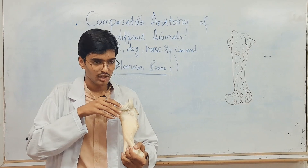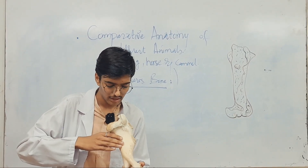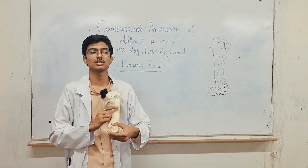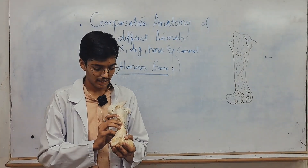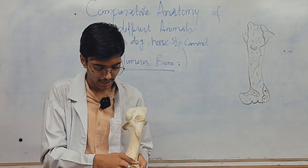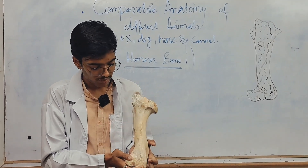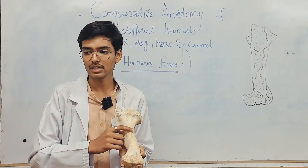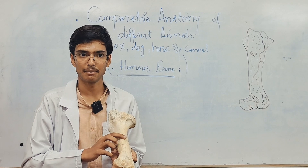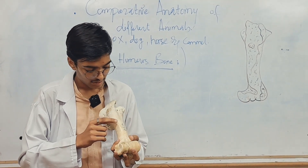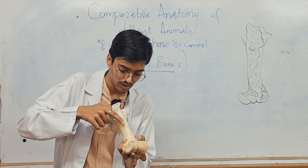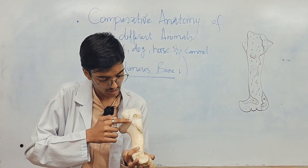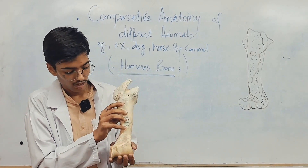Coming down to the shaft — right here is the musculospiral groove. It gives the path for the section for the deltoid muscles. On the medial aspect, this is the teres major tuberosity, which is not as prominent compared to the horse and camel — this is the humerus of ox. As we follow the deltoid tuberosity, there is the humeral crest. And above the deltoid tuberosity is the crest of the greater tubercle.